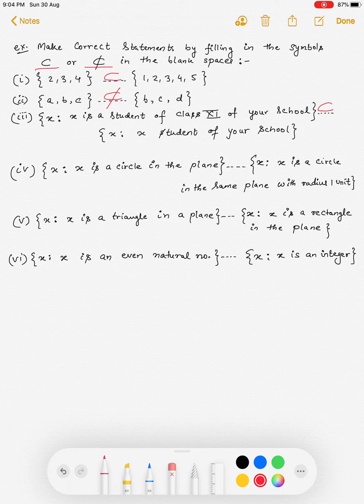Next is, X is a circle in the plane and other side है, X is a circle in the same plane with radius 1 unit. तो यहाँ पर circle जो है, one unit का ही है, specify, तो this is not.